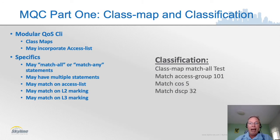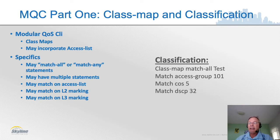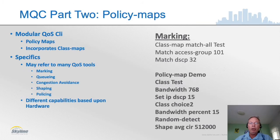Match-all means AND for each statement; match-any means OR for each statement. There's no point in having a class map unless there is at least one match statement. You can match on many different criteria: access list, layer two marking, layer three marking, interface, protocol — there are a lot of different things you can match on. In a policy map, you refer to a class map by its case-sensitive name and then say how you want that traffic dealt with — that's the policy you're enforcing.